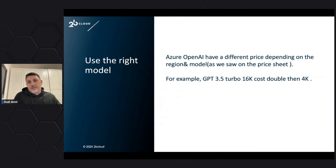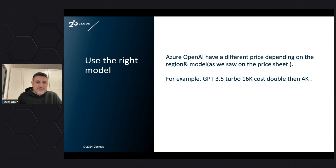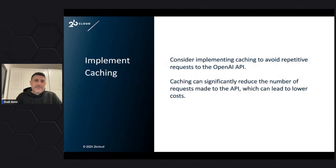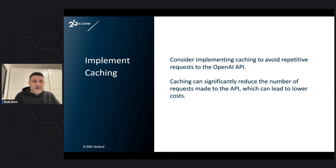Use the right model. In the spreadsheet we saw GPT-3.5, GPT-4, 16k, and 32k. If you don't need more than a certain context length, please choose a smaller model — because once you're paying for a 16k context, your price doubles. Implement caching: a caching strategy is a great way to avoid repetitive requests to OpenAI. Once you have repeating requests to your API, implementing caching reduces the amount of data your prompts consume.